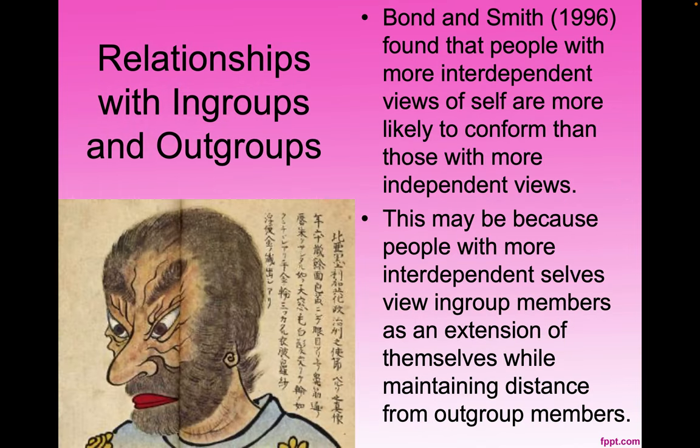People with interdependent selves focus their trust on people they share some kind of relationship. Yamagishi and Yamagishi in 1994 found that Americans tend to have higher levels of general trust than the Japanese because the Japanese are more focused on their in-group. Bond and Smith in 1996 found that people with more interdependent views of self are more likely to conform than those with more independent views.